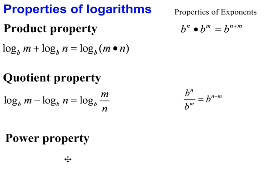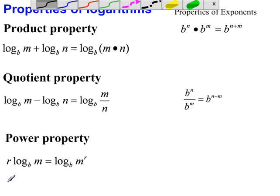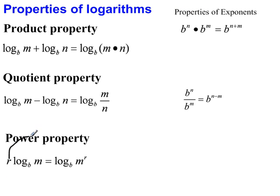The power property states that r times log base b of m could be rewritten as log base b of m to the r. In the power property, the coefficient r is being moved and made the exponent of m.